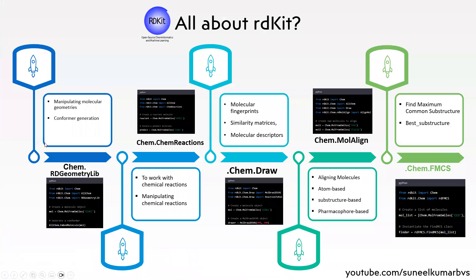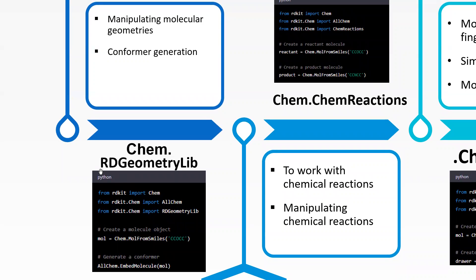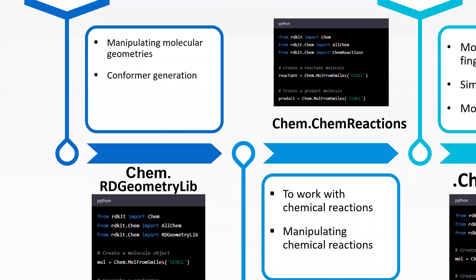Next are more sub-packages under rdkit.Chem. The rdGeometry library provides tools for manipulating molecular geometries, including bond angles, torsion angles, and molecular conformations. The two major classes of rdGeometry are rdGeometry.rdGeom and MolConformer, plus the MolTransform class. The MolConformer class provides tools for generating molecular conformations, while the MolTransform class provides tools for manipulating the geometry of the molecule.